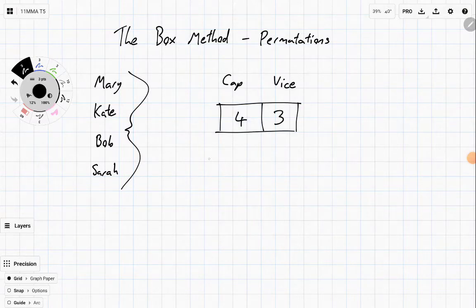So the number of options, what we'd call permutations, is just four times three, which is twelve.